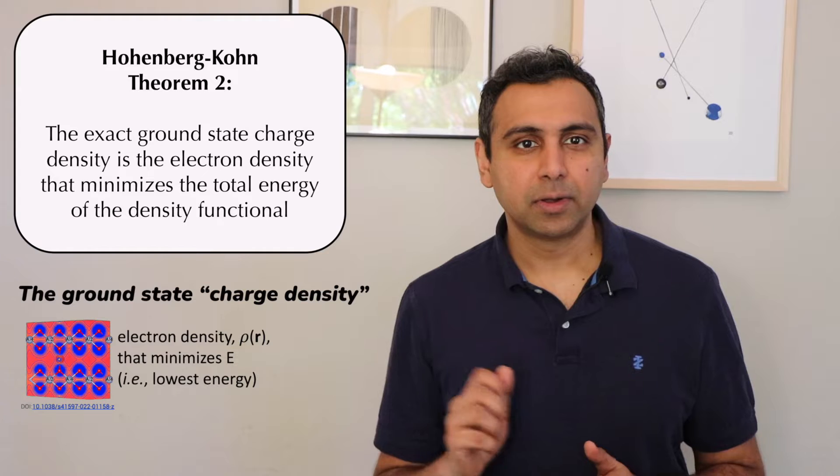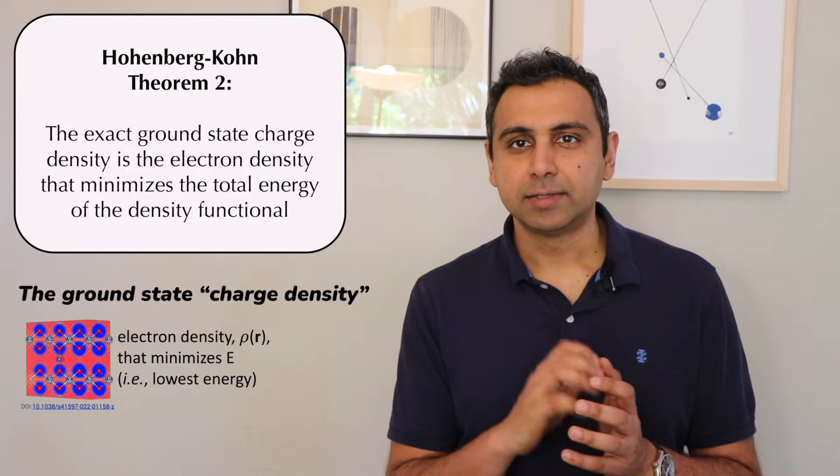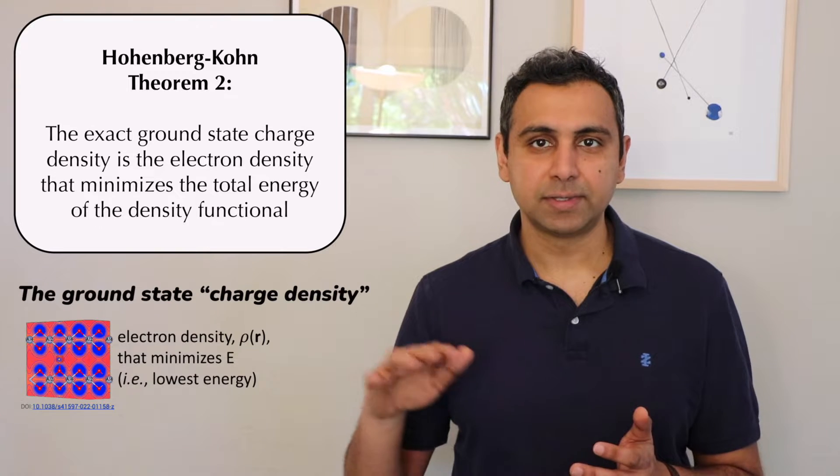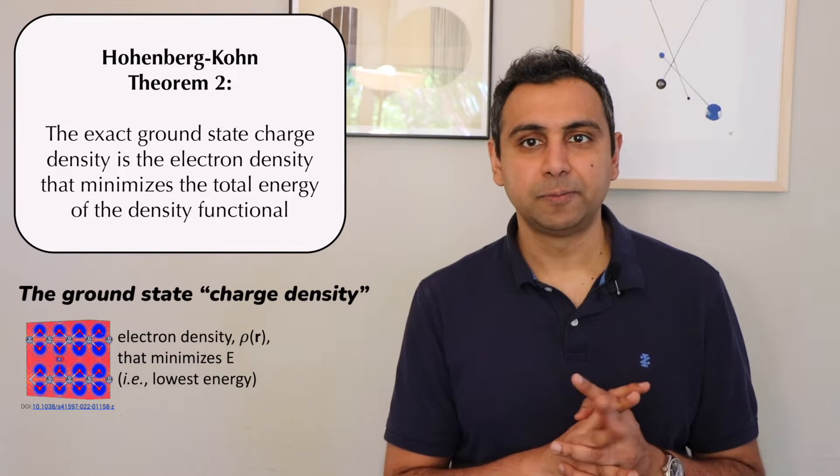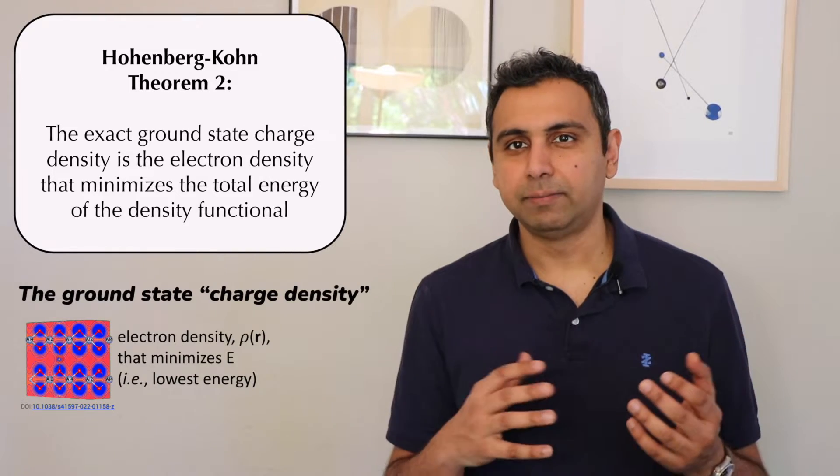Regarding the charge density, what the Hohenberg-Kohn theorems of DFT tell us is that the correct charge density is the one that minimizes the energy of the system according to the density functional. But how do we get this charge density, meaning the one that best distributes the electrons in your material such that if you plug this charge density function into the density functional it would give you the lowest energy answer?